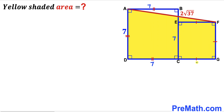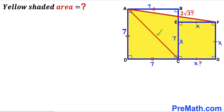Let's assume the side length of the smaller square is X, so all four sides are X. Our task is to find the value of X before we can calculate the area of the yellow shaded region. In the next step, we are going to connect vertices A and C.